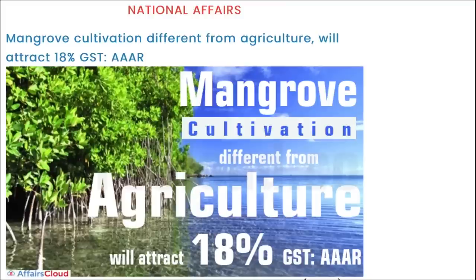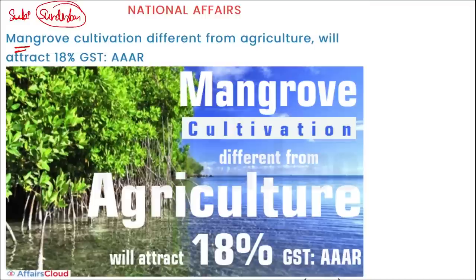Now let's move to today's current affairs. First, we are talking about mangrove cultivation. Mangroves are basically found in areas like the Sundarbans delta. Mangrove cultivation, being different from agriculture, will attract 18% GST as per the AAAR report.